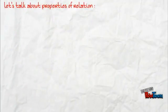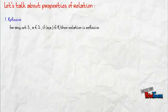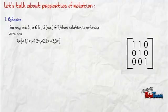Let's talk about properties of relations. First, Reflexive. Relation is reflexive if and only if it contains all diagonal elements as one. Here we have an example, set r.